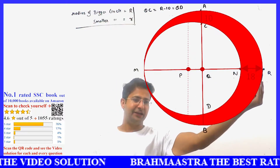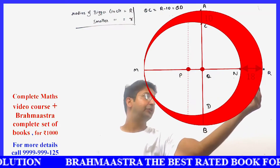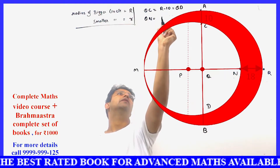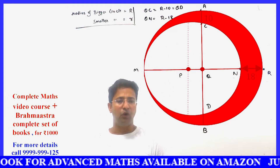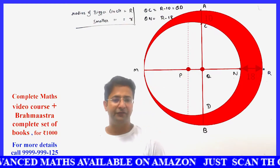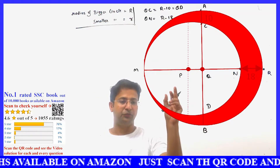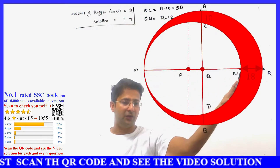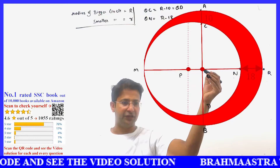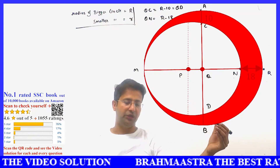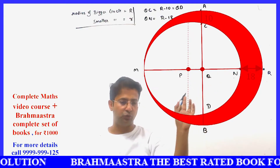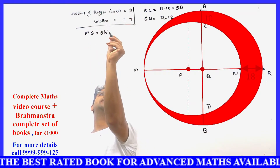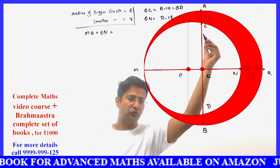QR is the radius of the bigger circle, so QR = capital R. NR is given as 18, so QN = R minus 18. Now we apply the intersecting chords theorem. In the smaller circle, the two chords are MN (which is the diameter) and CD. We apply: MQ × QN = QC × QD.